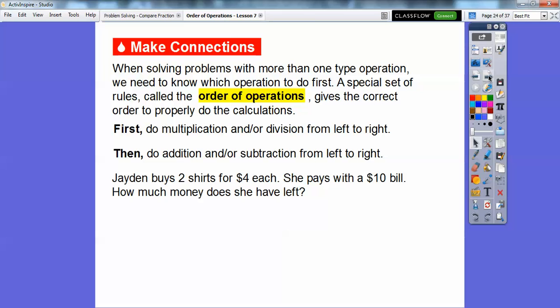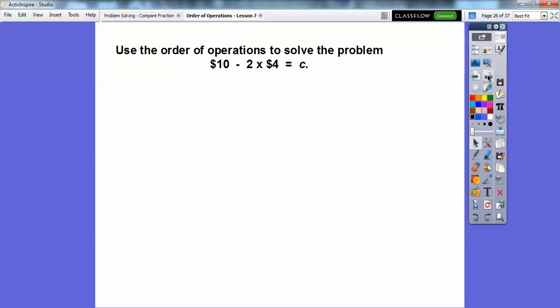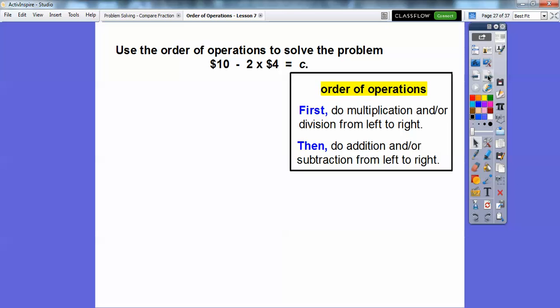Jaden buys 2 shirts for $4 each. She pays with a $10 bill. How much money does she have left? So we can write $10 that she paid with minus the 2 × 4 because she bought 2 shirts for $4 each. Use the order of operations to solve the problem. First, we do multiplication and division from left to right. So I'm going to do this multiplication first. So 2 × 4 is 8. And then we do the subtraction. So 10 - 8 is 2. So Jaden will have $2 left.